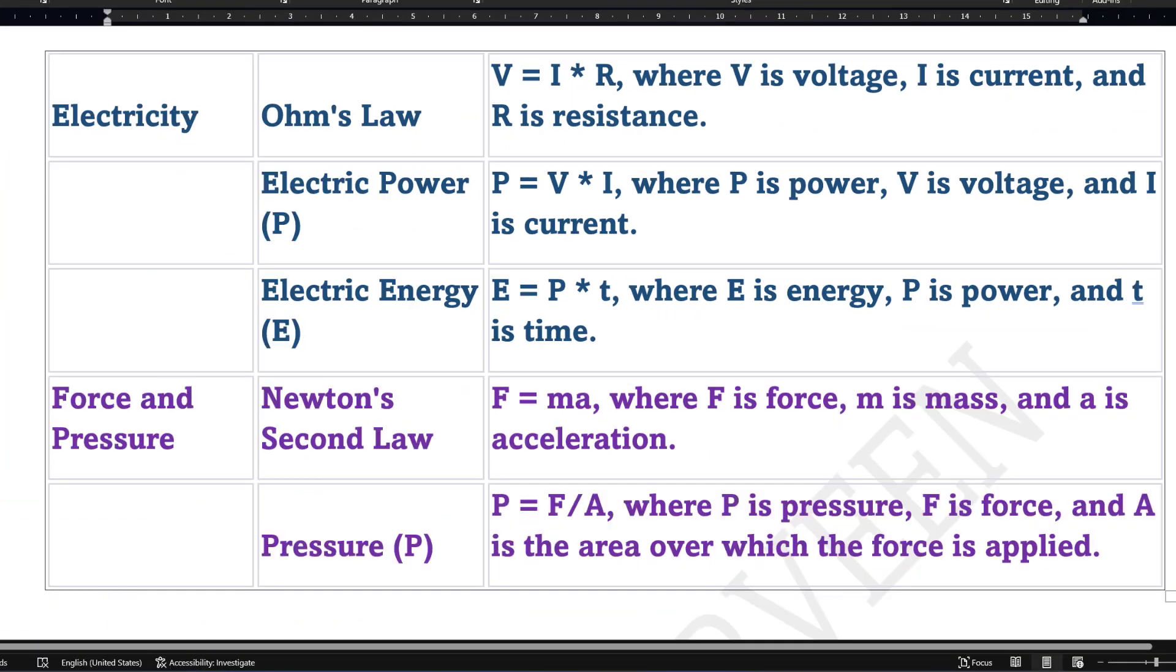Next we have formulas in electricity. I am giving you a few simple formulas: Ohm's law is V = IR. We have a formula for electric power which is P = V×I, where V is voltage and I is current. Electric energy is equal to power times time. We also have the most famous Newton's second law which relates force and acceleration: F = ma. You can also replace a by acceleration due to gravity, so you get F = mg. Direct questions are asked in examinations where you can just substitute the values and find the force.